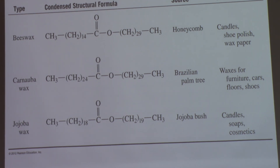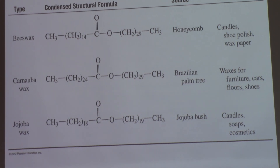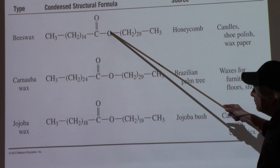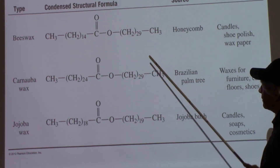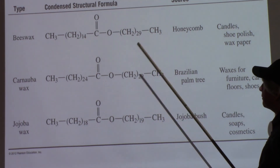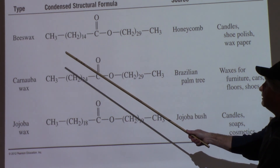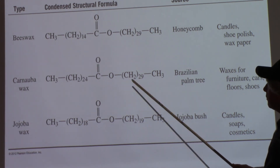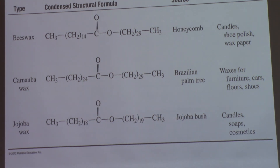Here are three examples of waxes, including beeswax. Notice the ester group — the carboxyl is in the middle of the chain rather than at the end as in fatty acids. Also note the carbon count: one example has 15 and 30 carbons on each side — 42 carbons total. Another has 25 and 31 carbons — 56 total. These are very hydrophobic because they have so many carbons.